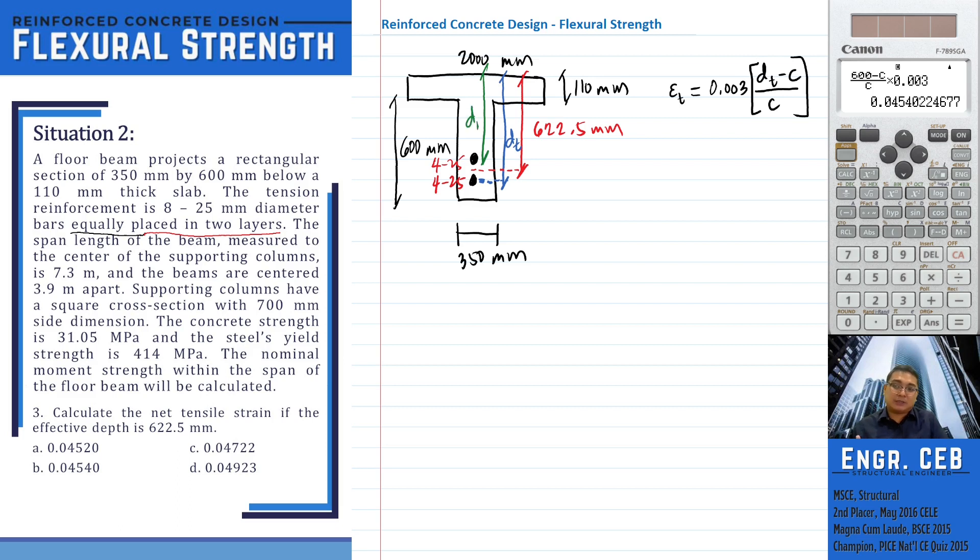So we should use this distance, let's say D sub 1. So if we are asked to solve for the net tensile strain, that would be the farthest distance, so up to the outermost layer of steel reinforcement.